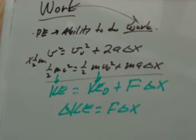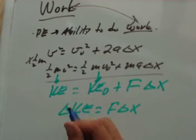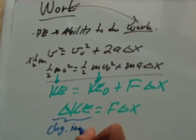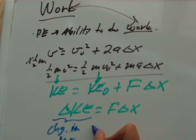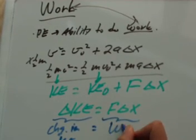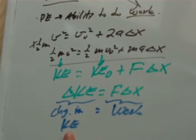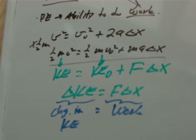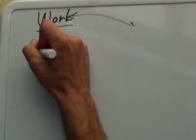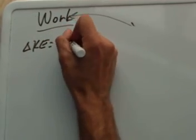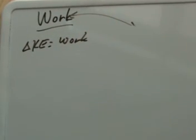That's kind of interesting. It turns out that delta KE — the change in kinetic energy — equals F times delta x, and this quantity F times delta x is work. So there's another operational definition of work: work is the change in kinetic energy. Alternatively, if you can do work on something, you can change its kinetic energy. Work can be used to change kinetic energy, and this definition looks like F times delta x.